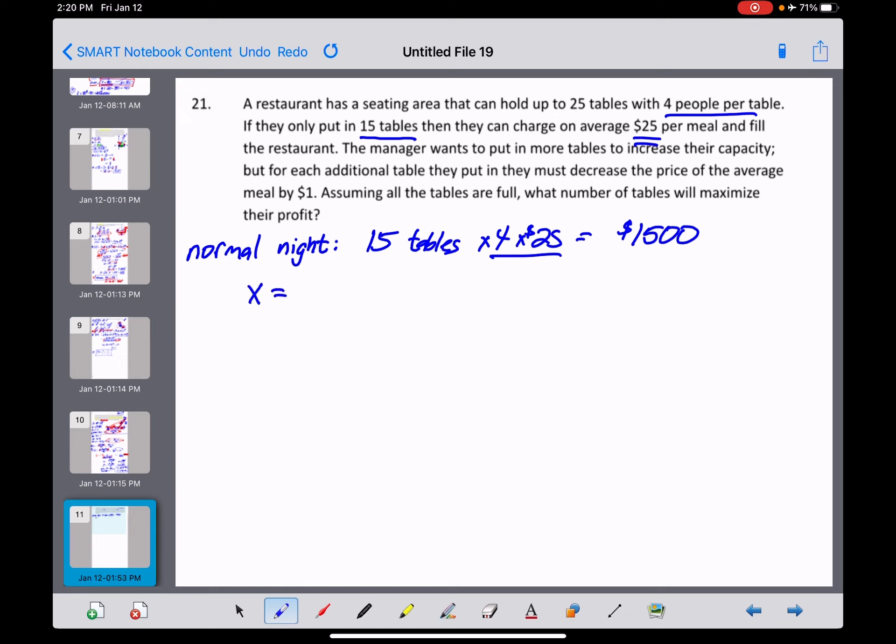We're going to try to let X equal the number of additional tables that we are going to put out on this particular evening, and let's see what we can do to maximize our profit as a restaurant here. So we need a profit function. By the way, I don't think we need a second variable here at all, so I'm just going to go right to step two.